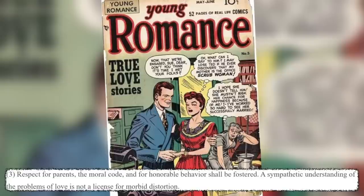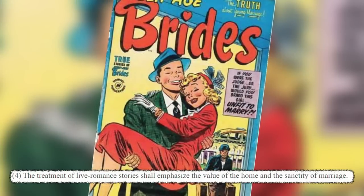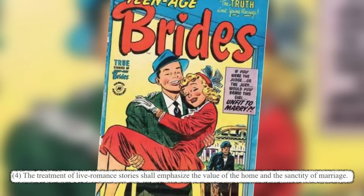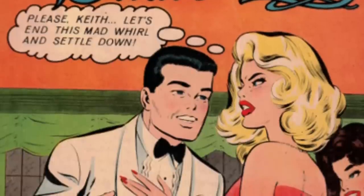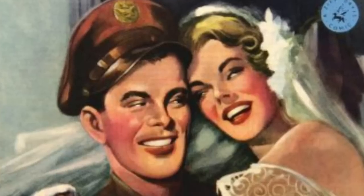Rule four: the treatment of love-romance stories shall emphasize the value of the home and the sanctity of marriage. So here's another genre cut off at the knees — romance. Some of the early romance stories went so hard, they were torrid beyond lurid. After this, you get the really watered-down version — it's going to get very tropey and stereotypical, and lots of female characters in particular are going to regress in order to fit these new standards in pretty much every genre. It's usually highly idealized or bordering on the ridiculous — you can see that by tracking Lois Lane from the golden age into the silver age.